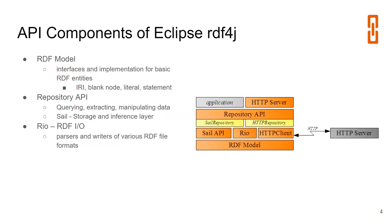Eclipse RDF4J has layered architecture where each layer has a responsibility. The most basic layer is the RDF model, which corresponds to the RDF specification and supports presenting what is representable in RDF as an object model in Java. There are classes for IRIs, blank nodes, literals, then for the entire statement, and quite naturally for RDF datasets and RDF graphs. In RDF4J, named graphs are called named contexts for historical reasons, but those are the same things.